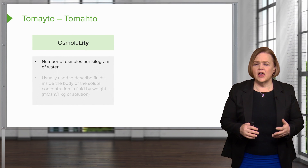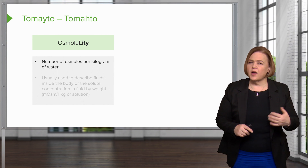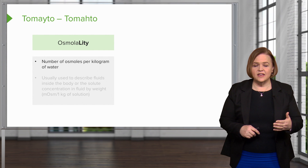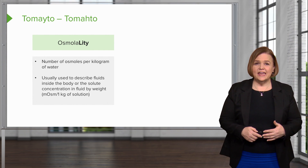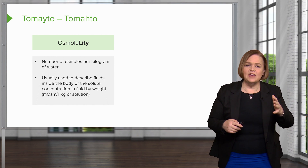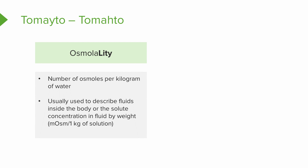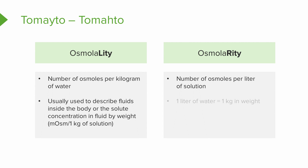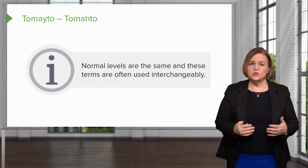So what are we talking about with fluid rushing in or out of the cell? Osmolarity is the number of osmoles per kilogram of water — we use it to describe the solute concentration in fluid by weight. Osmolarity is the number of osmoles per liter of solution. One liter of water equals one kilogram in weight, so we're going to use osmolality and osmolarity as equivalent terms for our purposes — their normal levels are the same.